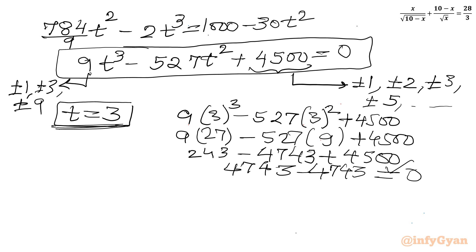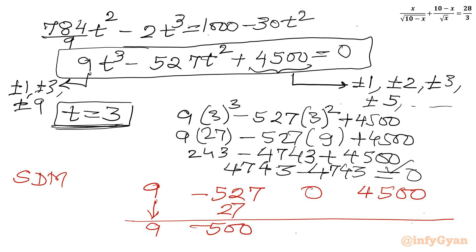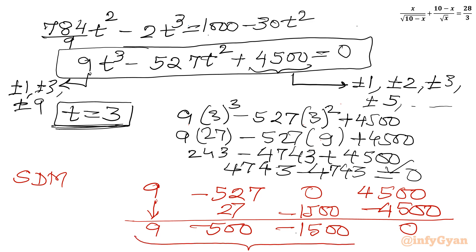Using synthetic division with t = 3 and coefficients 9, −527, 0, 4500: the process yields the quotient coefficients 9, −500, −1500. So we factor out (t − 3) and are left with the quadratic 9t² − 500t − 1500 = 0.